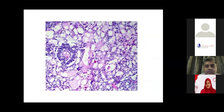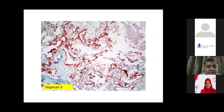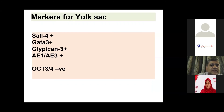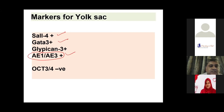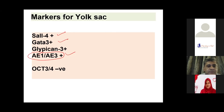This is a picture of yolk sac tumor with classic Schiller-Duval bodies. These are positive for glipican-3 — yolk sac tumors are nicely positive for glipican-3. The other markers for yolk sac tumors are SALL4, GATA3, and AE1/AE3. The issue is that if the lab does only AE1/AE3 in a germ cell tumor, they may end up calling it a carcinoma — this is the importance of doing a panel of markers and not a single marker. Serum AFP and other factors, including age of the patient, must be taken into consideration.